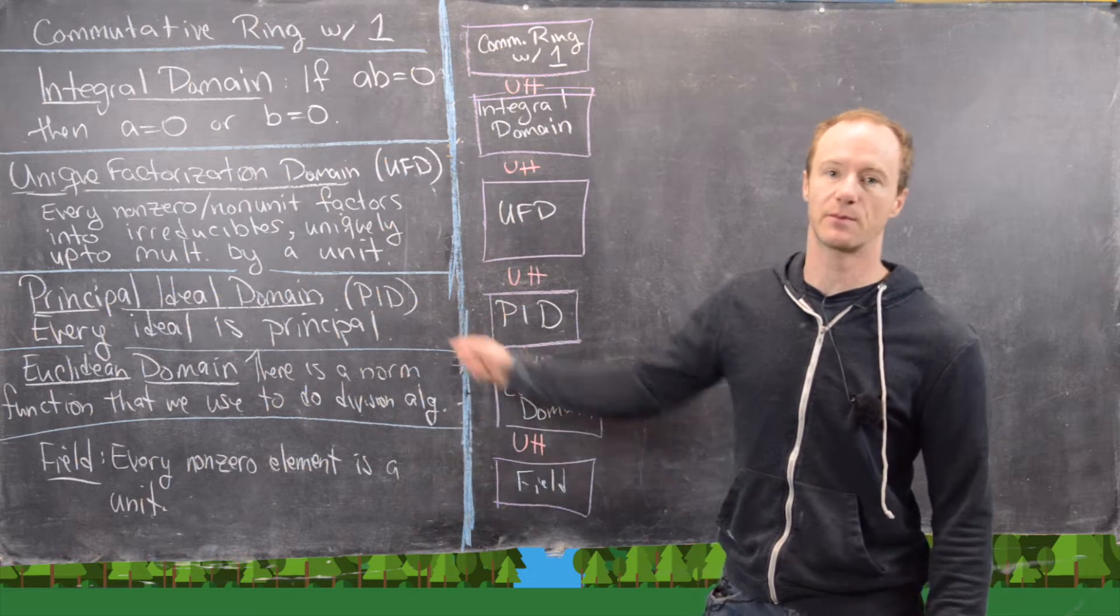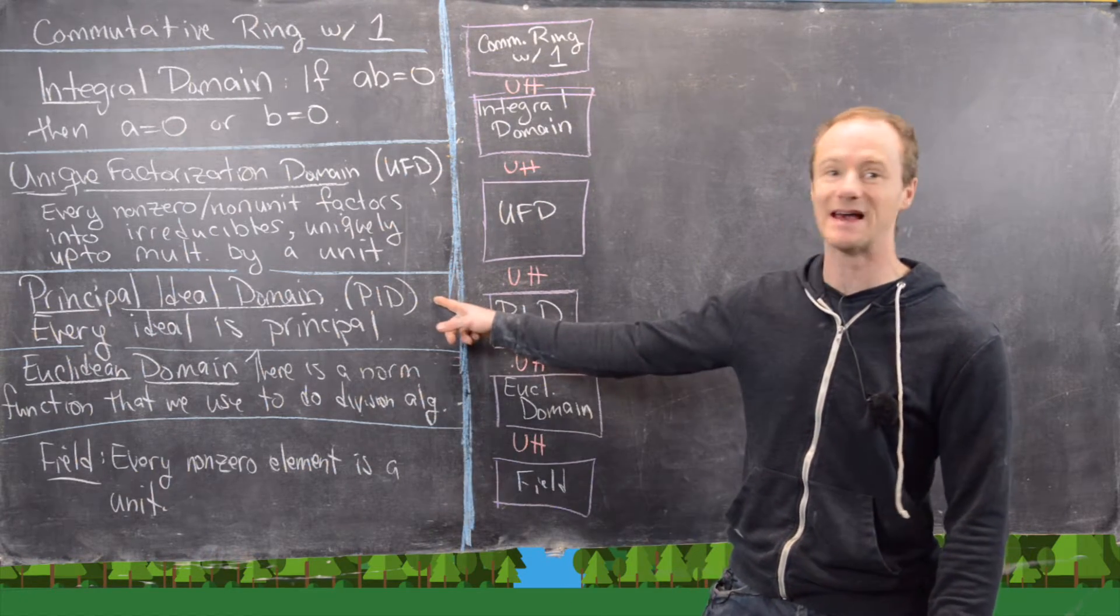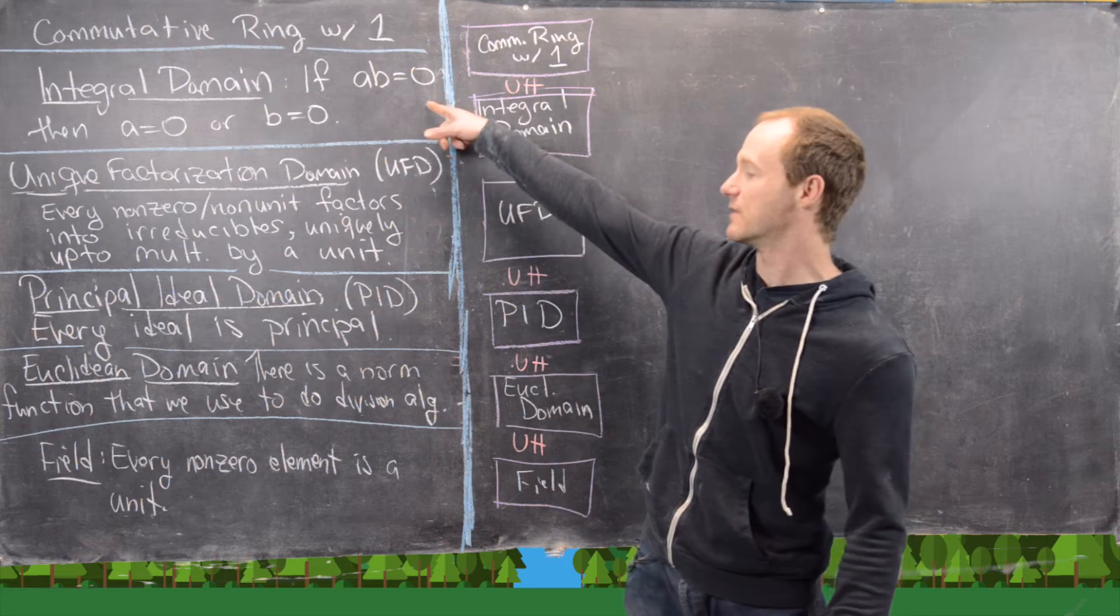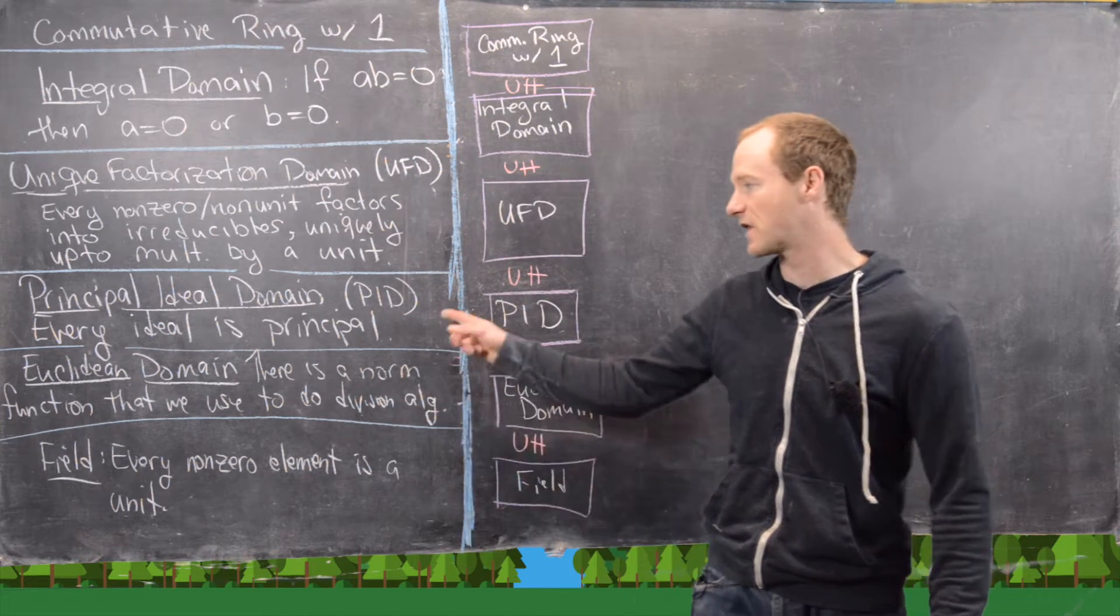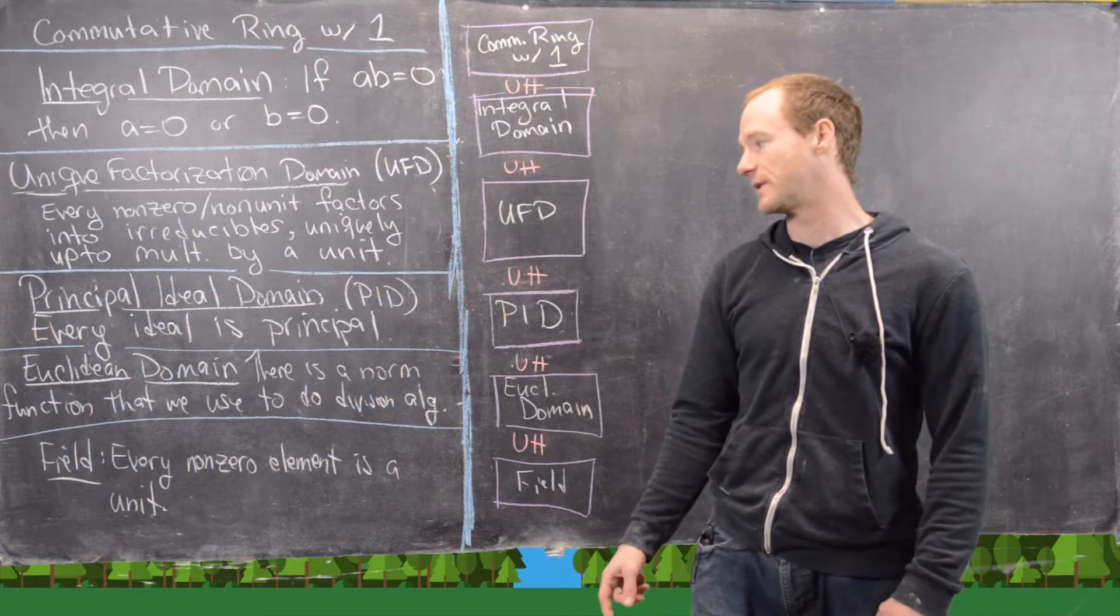And then next we have something called the principal ideal domain, or PID. And that's a type of integral domain where every ideal is a principal ideal. In other words, every ideal is generated by a single element.